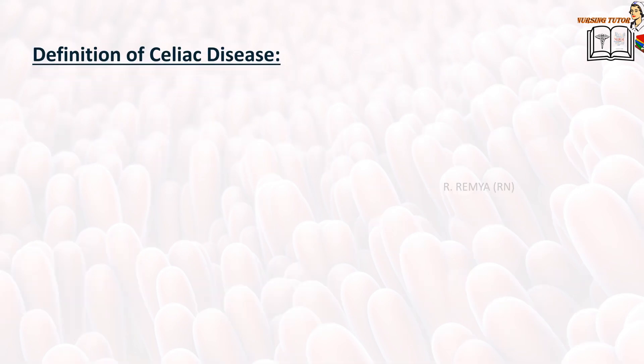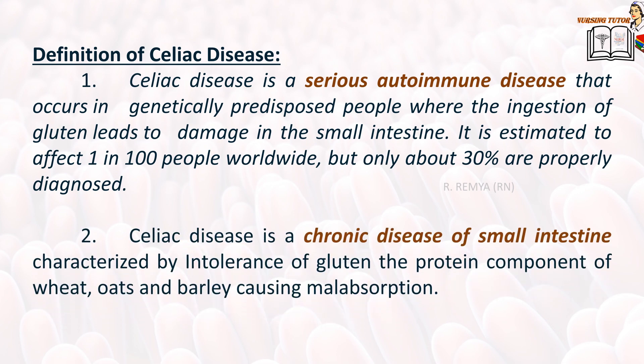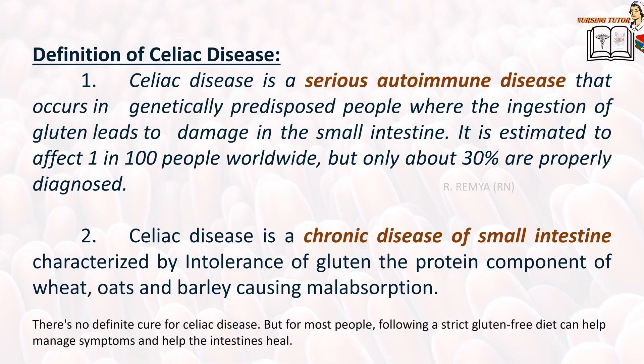First, we will see the definition of celiac disease. Celiac disease is a serious autoimmune disease that occurs in genetically predisposed people where the ingestion of gluten leads to damage in the small intestine. It is estimated to affect one in 100 people worldwide, but only about 30% are properly diagnosed. Celiac disease is a chronic disease of the small intestine characterized by intolerance of gluten — the protein component of wheat, oats, and barley — causing malabsorption.